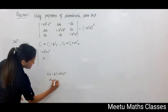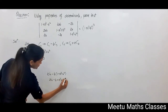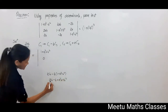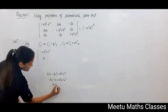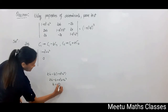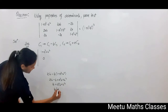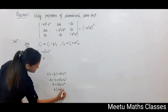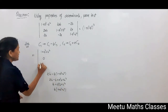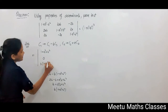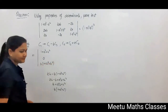Then column 1 — if you subtract b times column 1 it will become (1 + a² + b²). Multiplying by b and subtracting, it will become 2b minus b plus a²b plus b³. This becomes b + a²b + b³, and b can be taken out giving (1 + a² + b²). So this becomes (1 + a² + b²).